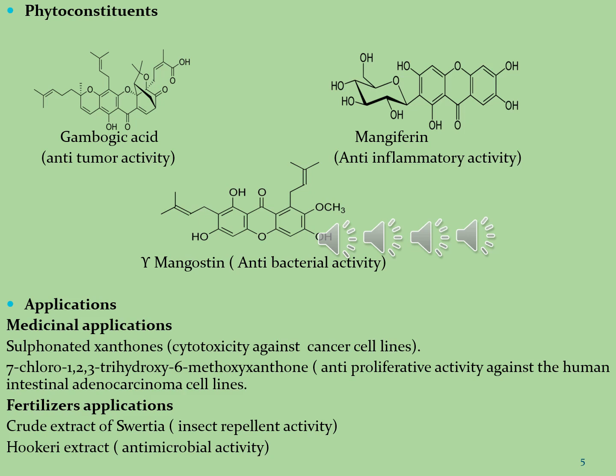The first molecule is gambogic acid. Gambogic acid is derived from the brownish or orange resin of the Garcinia plant. It is used in its acid form as a novel anti-cancer agent that inhibits cell proliferation, angiogenesis, and metastasis, with ability to detoxify, kill parasites, and stop bleeding as a hemostatic agent.